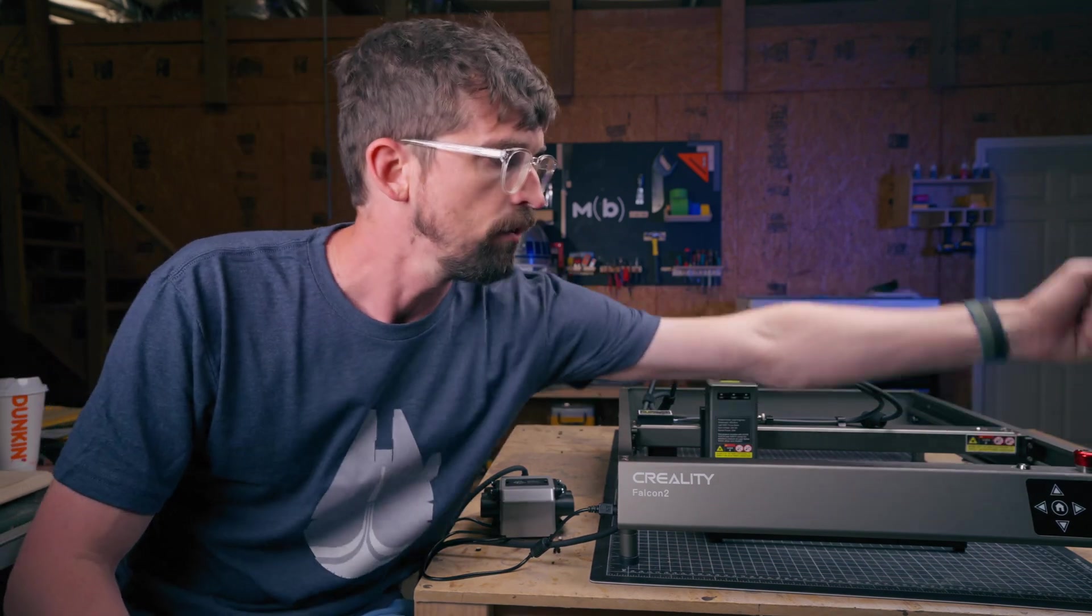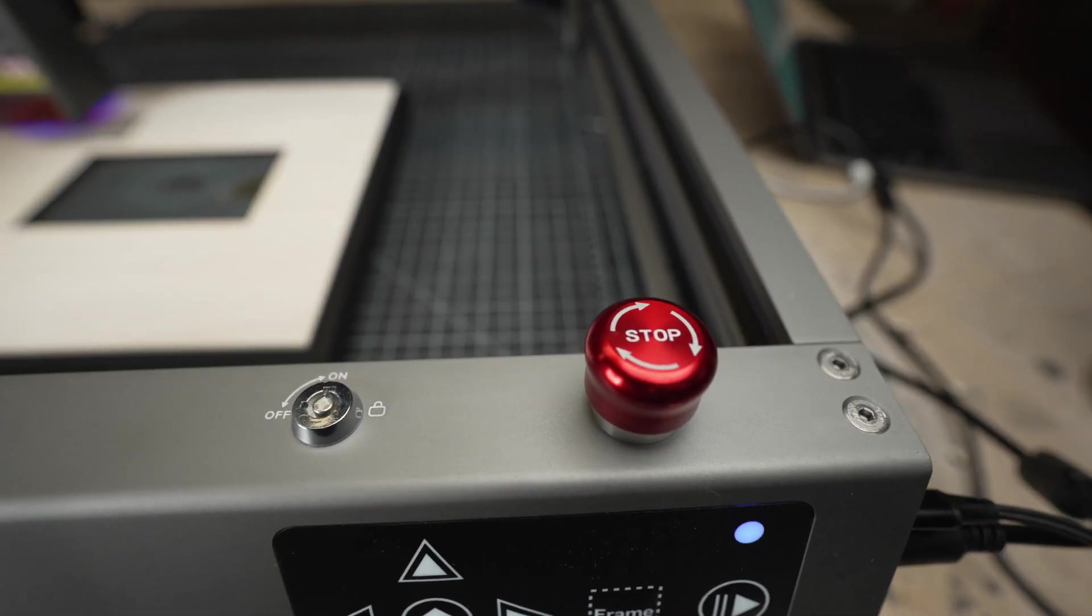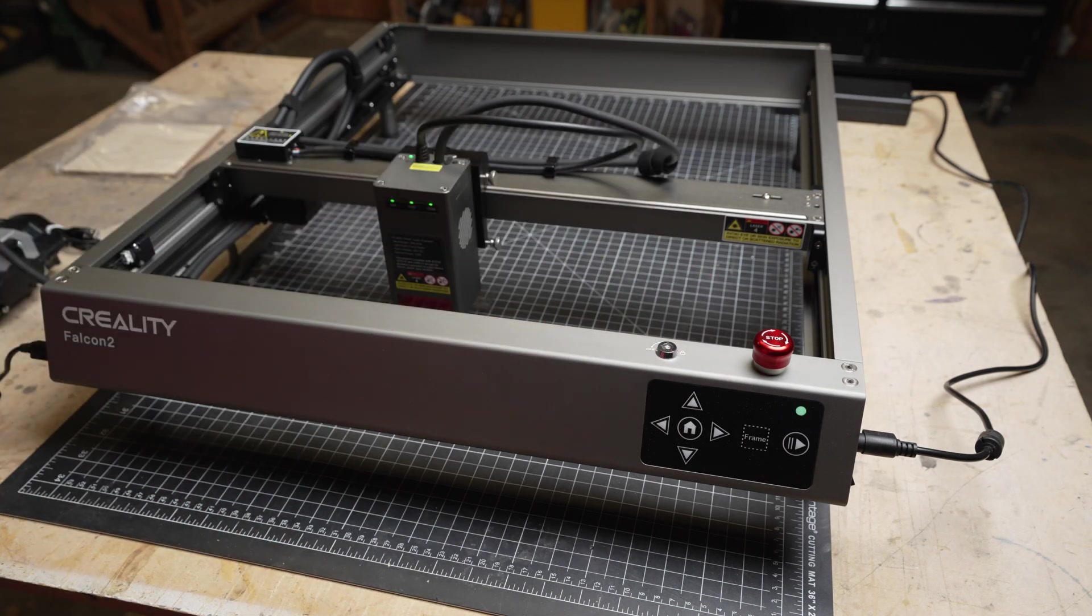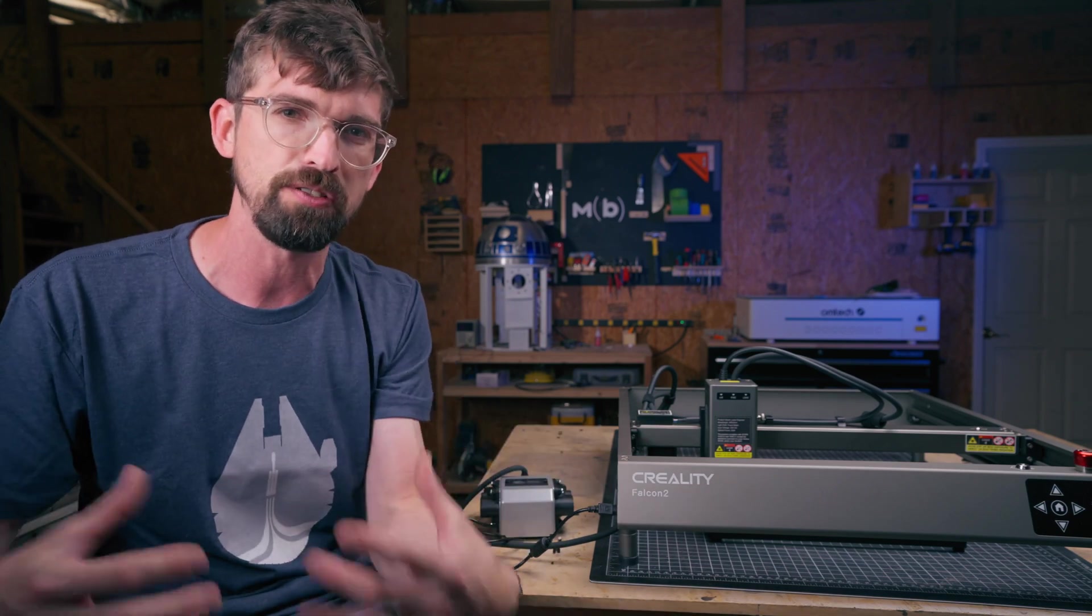Then it's got your emergency stop right here, so just the button that you hit that is right there front and center. And they have a lock and key, so this has to be turned with the key to the on position to get this to run. I don't think I've seen that on any other diode machine, that's pretty common with your bigger CO2 machines.